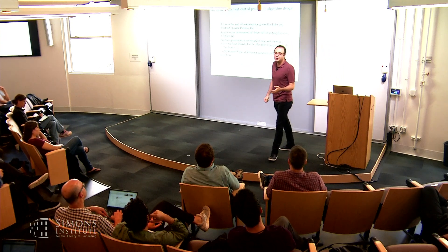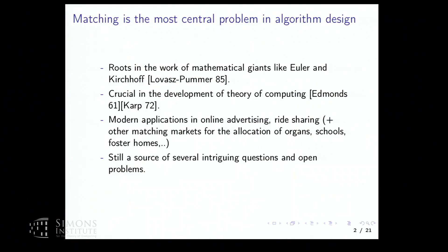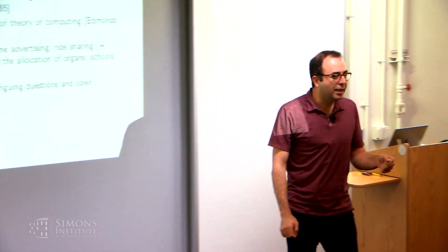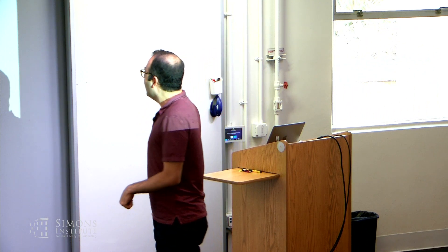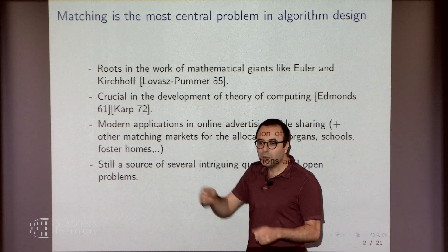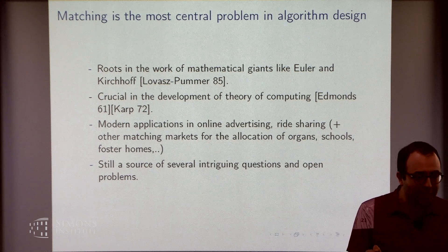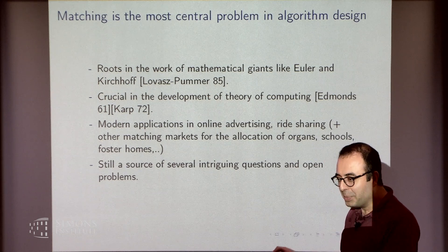Matching is the most central problem in algorithm design and combinatorial optimization. It has roots in the work of giants like Euler and Kirchhoff. It's been crucial in the development of theory of computing and polyhedral combinatorics. Edmonds' paper on finding matchings in general graphs also developed this notion of good algorithms — what we now call polynomial time algorithms. Karp's paper that reduced combinatorial optimization problems to each other introduced problems we now call NP-complete, with three-dimensional matching as one of the examples.